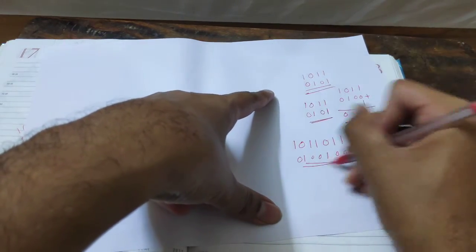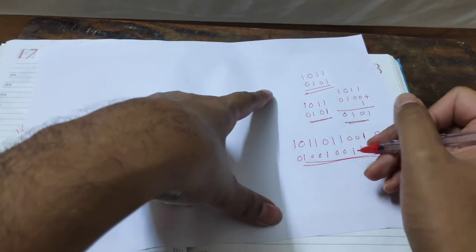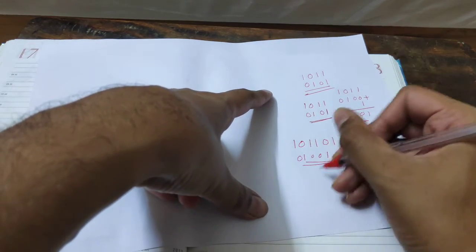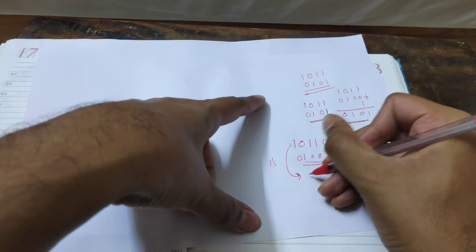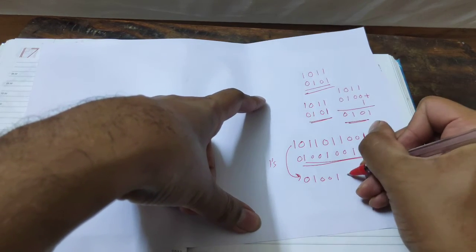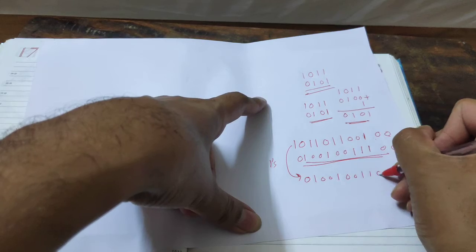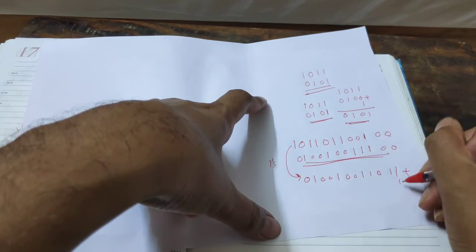Now to check the answer is correct or not, just do it in the casual, usual way. Now we are doing the 1's complement: 0, 1, 0, 0, 1, 0, 1, 0, 1, 1, 0, 1, 1.